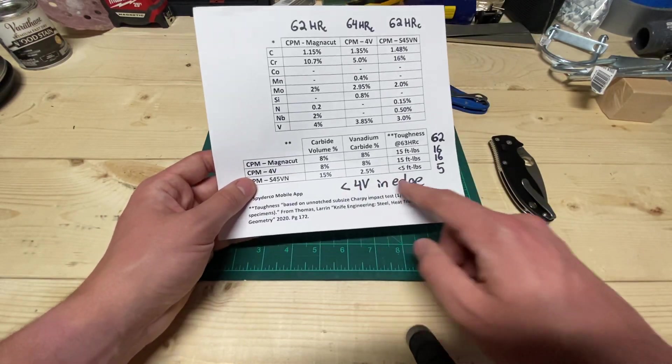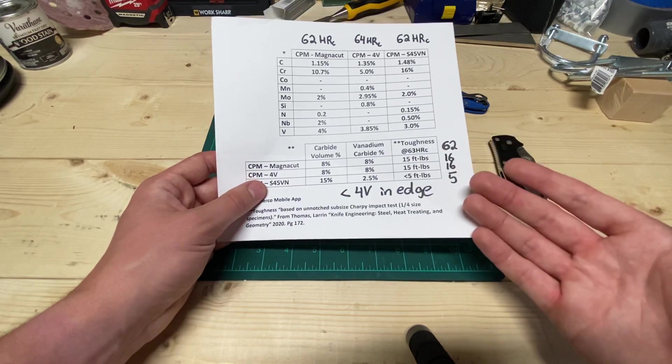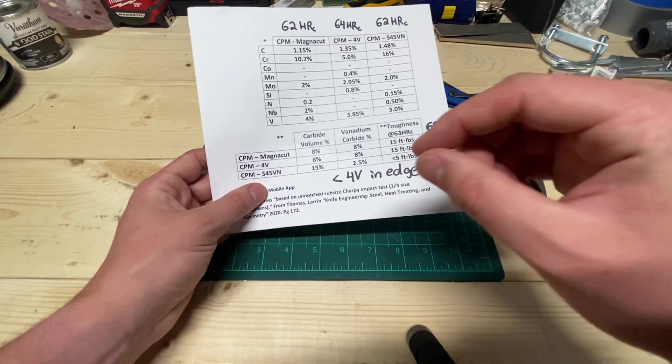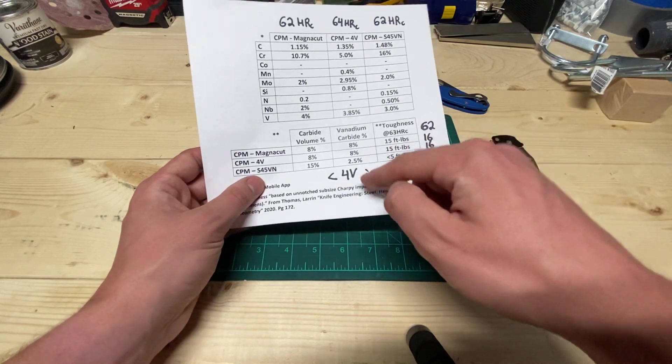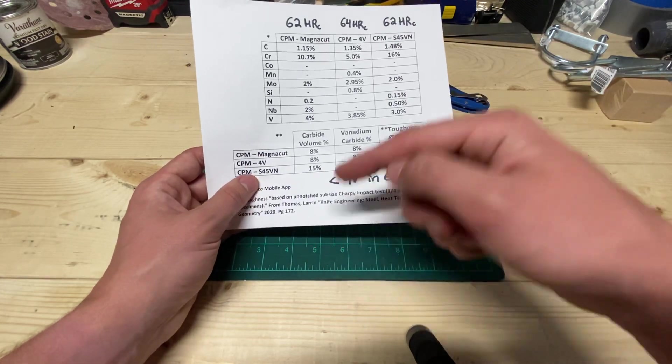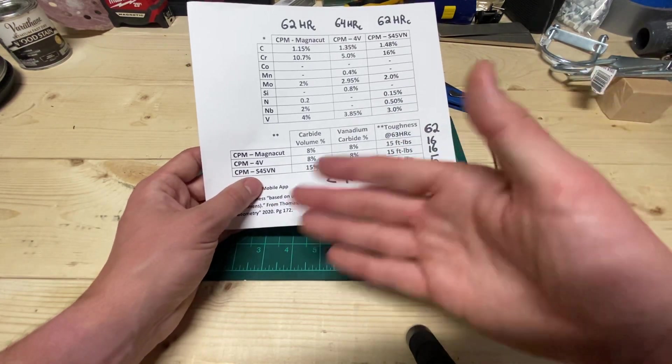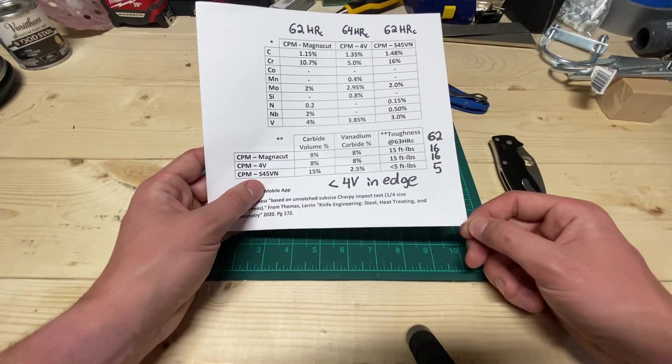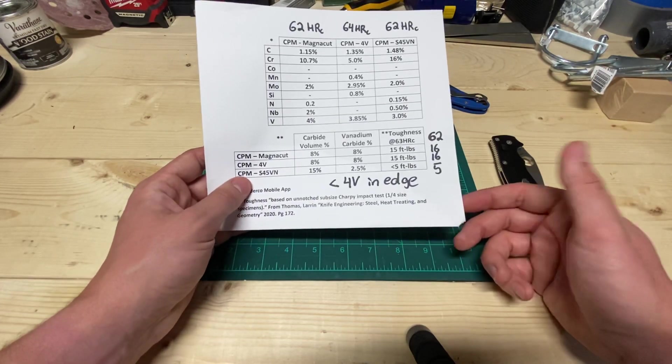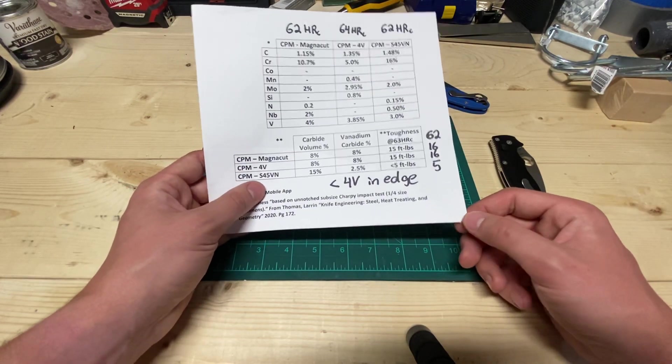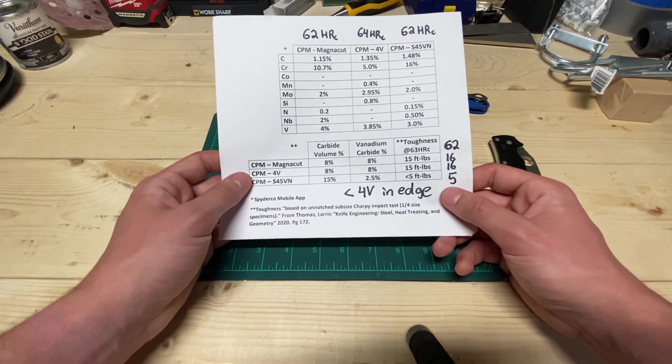But realistically speaking, my opinion of MagnaCut is that if you are targeting edge retention less than 4V, you should just make it out of MagnaCut pretty much straight. You know, so that's where it's at in my opinion. That's maybe not fair. Well, yeah.